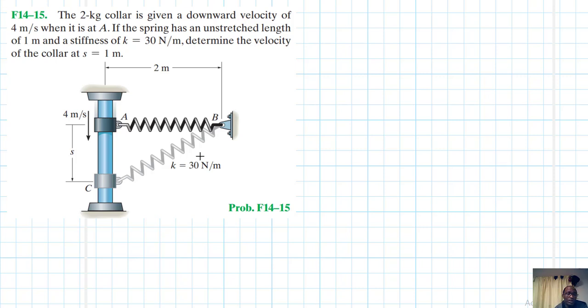So we are assuming that this is in the vertical plane. And since only the conservative forces are acting on this particular collar, we have the gravitational force and the spring force. We can use conservation of mechanical energy.